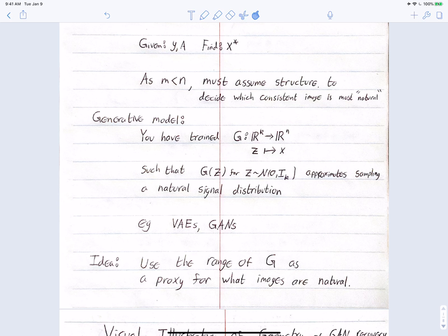As a generative model, suppose we have trained a function g: R^k → R^n that maps a latent code z into an image x corresponding to z. This generative model samples from a particular learned distribution — g(z) for z ~ N(0, I_k) approximately samples some natural signal distribution. We've seen ways of doing this, for example variational autoencoders or generative adversarial networks, both of which give us g's with low-dimensional latent representations.